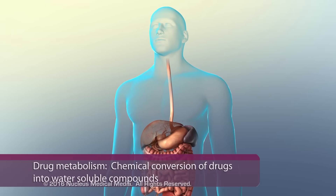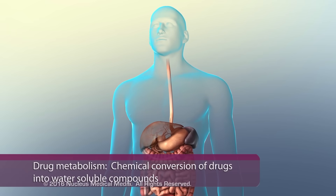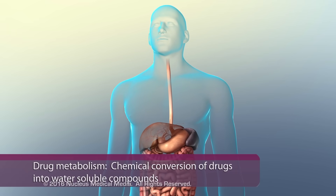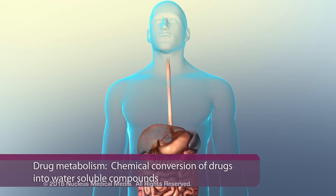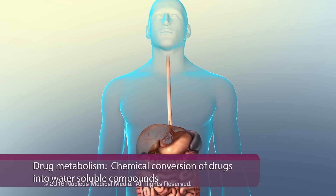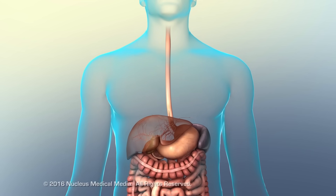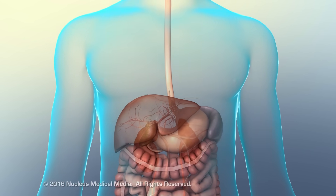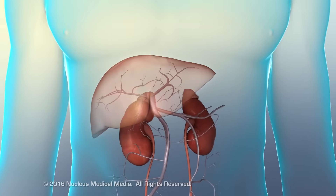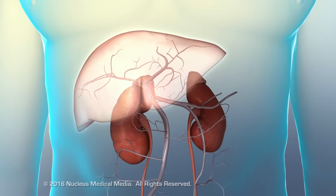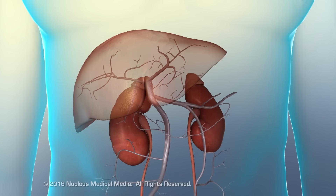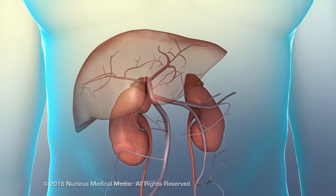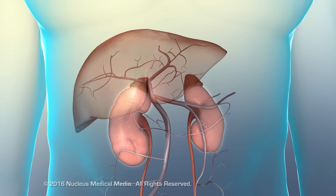Drug metabolism is the chemical conversion of drugs into water-soluble compounds that can be excreted by the body. Drug metabolism mainly takes place in the liver, while excretion mainly takes place in the kidneys.